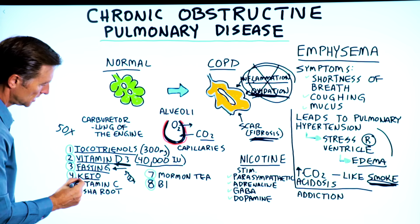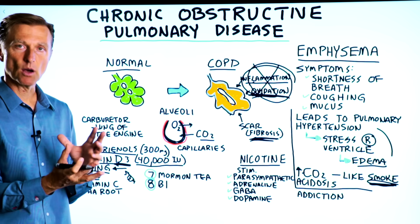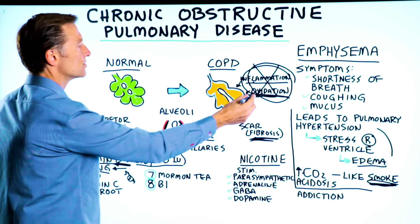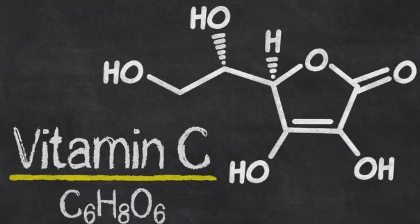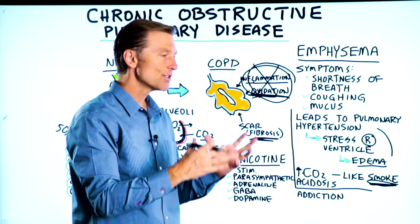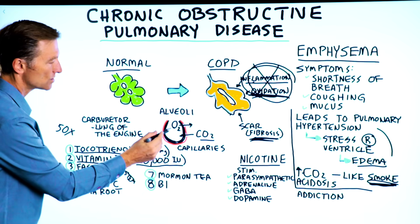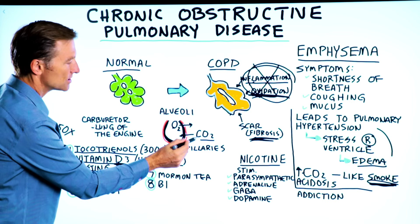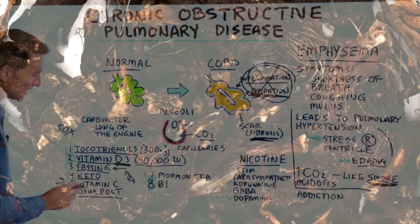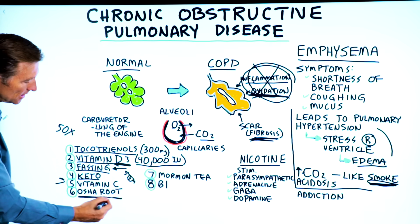Number four: keto. The way you do keto is you drop your carbohydrates and then your body starts to switch over into ketones from fat fuel. Ketones are very anti-inflammatory — another way to drop inflammation. Vitamin C, not synthetic but from actual food or a food concentrate, is another powerful anti-inflammatory. There are some additional studies showing that it'll increase your oxygen and decrease the CO2, so this is very important as well. Osha root is a Native American Indian remedy for lung disorders, so this is another great thing to consider.